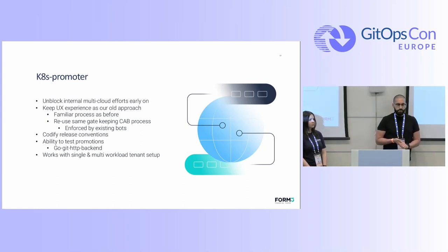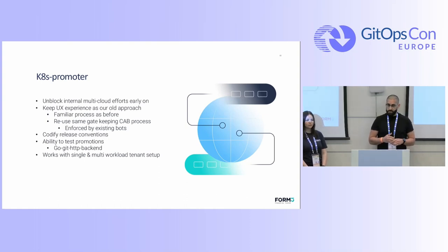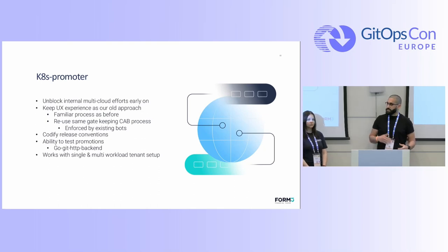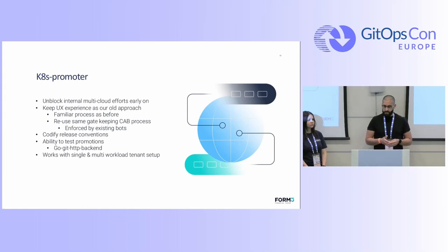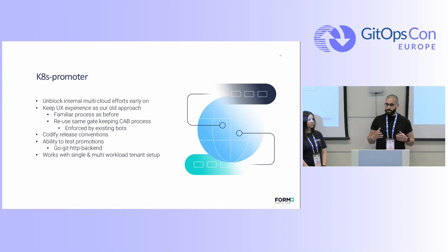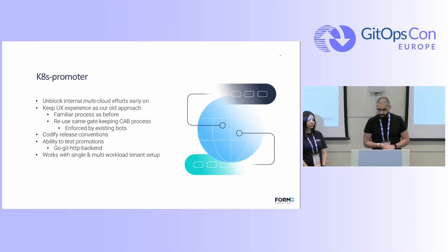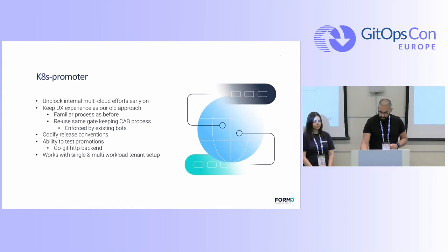We also wanted to codify our release conventions — the ordering of which environment needs to get targeted. And we wanted to be able to move quickly and change how we worked by being able to test our promotion. As part of this tool, we wrote a wrapper around go git to implement the HTTP backend so we can assert on git state over the HTTP wire using our own tests. The tool works with single and multi-tenant setups, and we will focus mostly on the single-tenant approach.